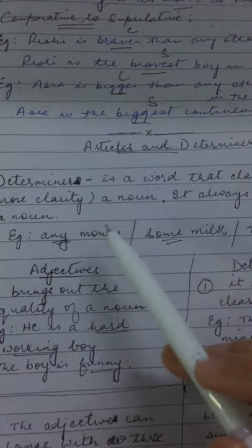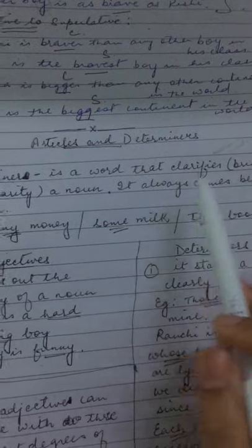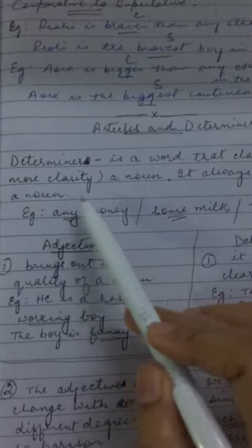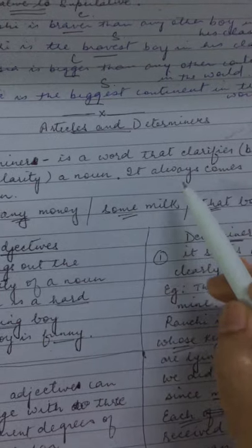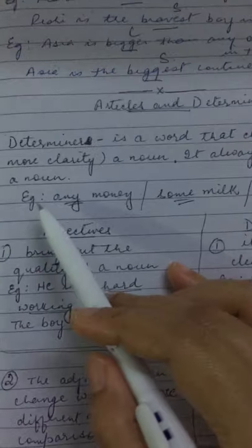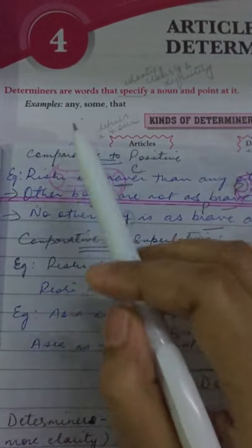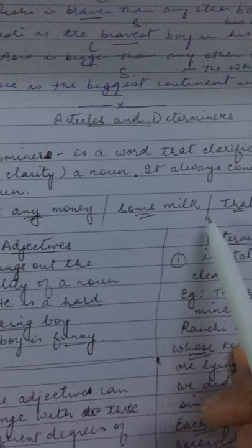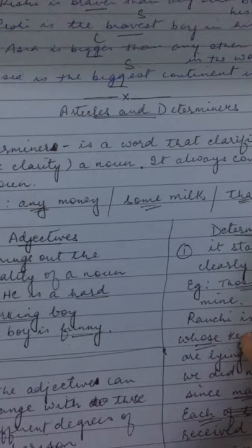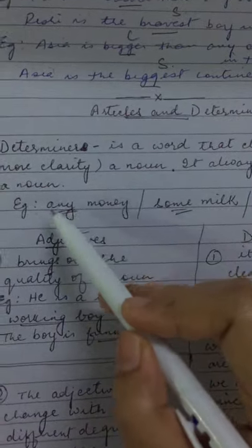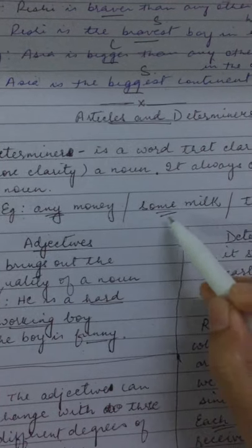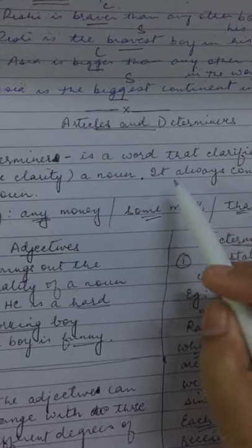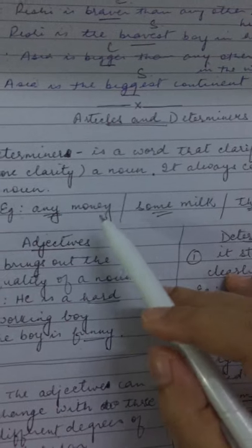A determiner is a word that clarifies a noun — clarifies means brings more clarity to a noun. It always comes before a noun. For example: any money, some milk, that book. Here you can see that these determiners — any, some, and that — always come before a noun.